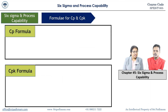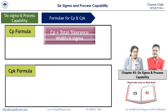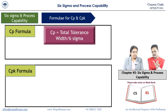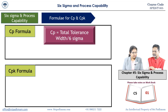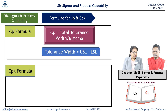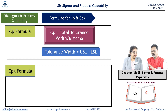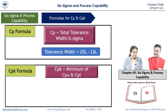CP equals total tolerance width divided by six sigma. Total tolerance width is USL minus LSL — upper tolerance limit minus lower tolerance limit, also called tolerance range. From one end to the other we get six sigma. So CP equals tolerance width, which is USL minus LSL, divided by six sigma.